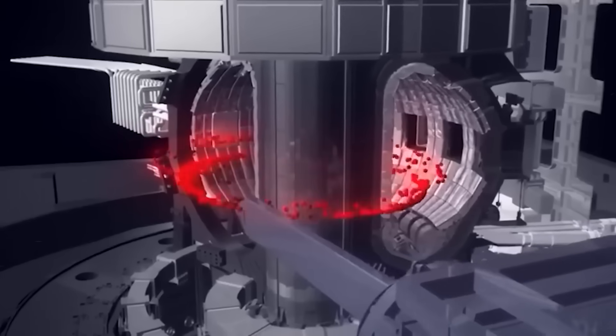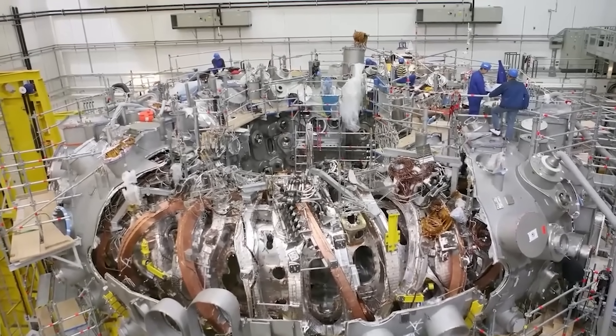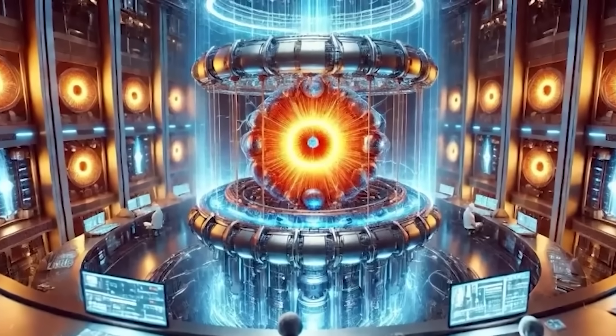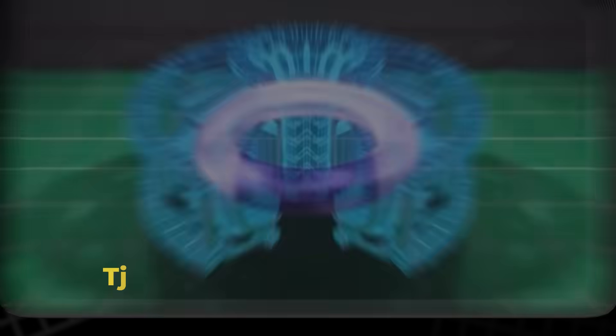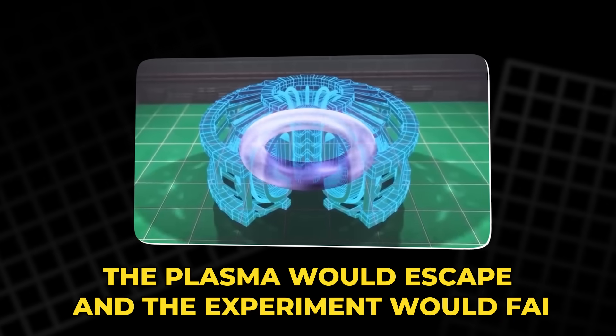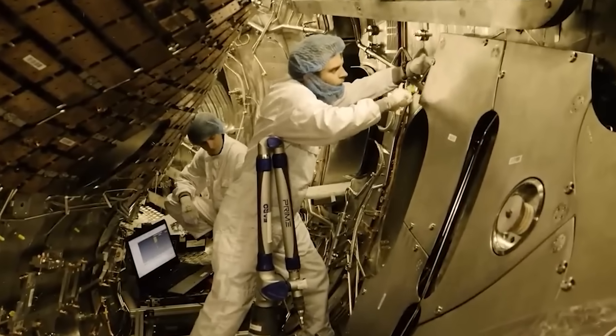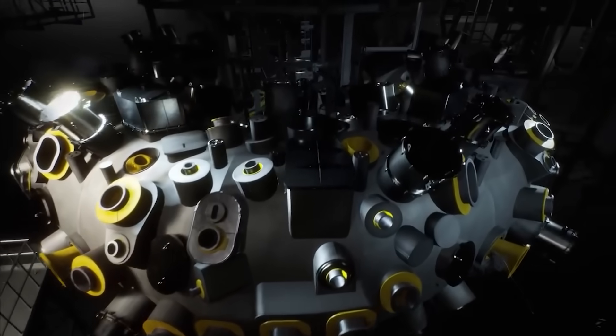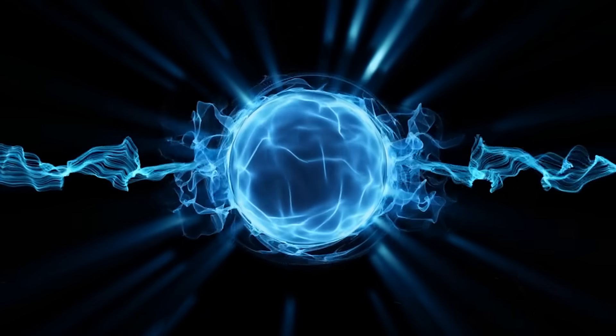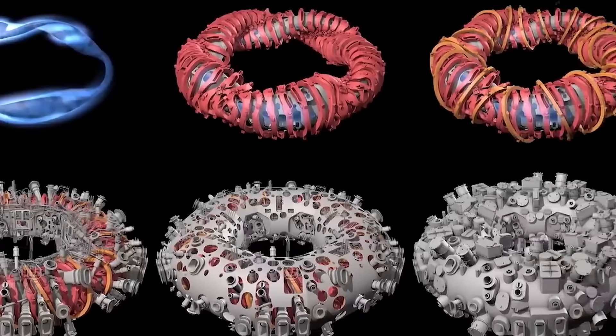And they built it with a level of precision bordering on obsession. Every coil, every pipe, every magnetic curve had to be perfect to a fraction of a millimeter. If anything was off, even slightly, the plasma would escape and the experiment would fail. They spent years modeling magnetic fields on supercomputers, shaping them into elegant, chaotic forms that could trap plasma like a cage made of invisible lines. The result was an engineering masterpiece.